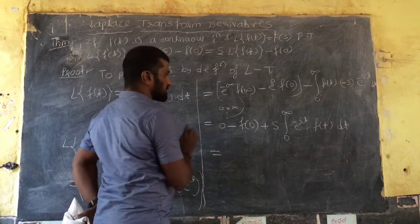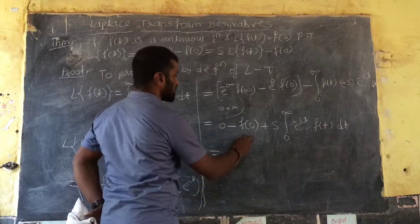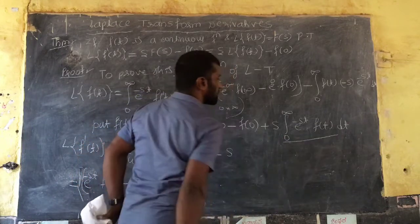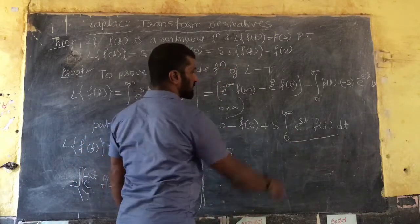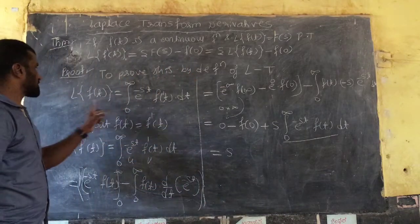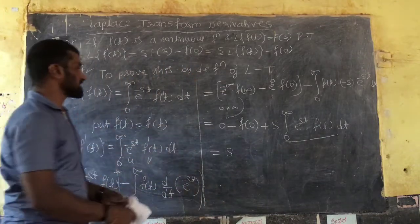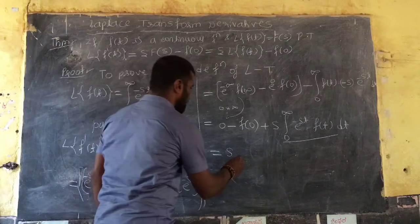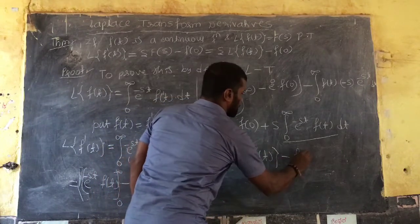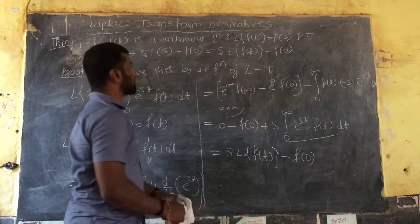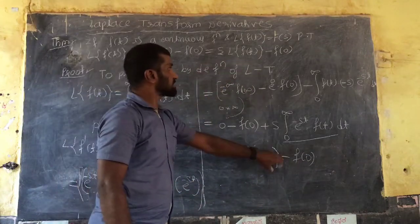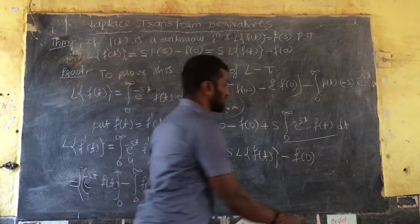So the first term is 0. We get s times the integral from 0 to infinity of e^{-st}·f(t) dt, which by definition is L{f(t)}, i.e., F(s), minus f(0). Therefore L{f'(t)} = s·L{f(t)} - f(0). Hence proved.